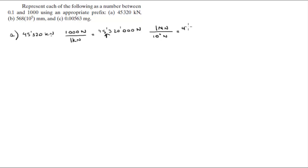You know that there's 10 to the 6 newtons in one meganewton, and this will put it at 45.320 meganewtons. The second one is part b: 568 times 10 to the 5 millimeters. Now this is equal to 56,800,000. Notice that I put the apostrophe to divide it in segments of three - makes it easier to look at the number.